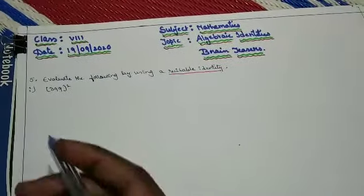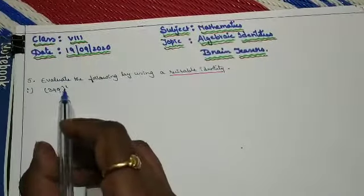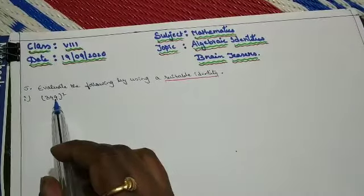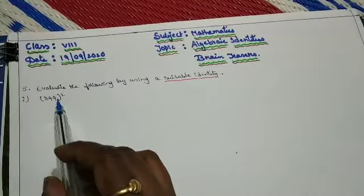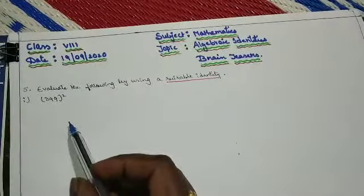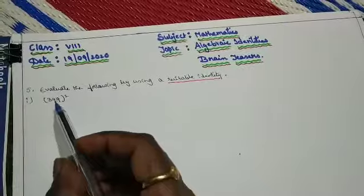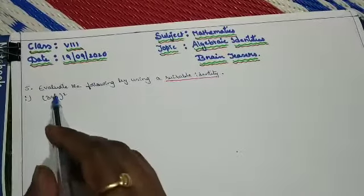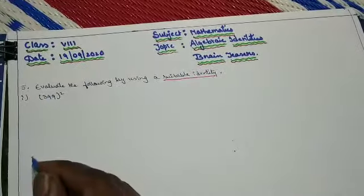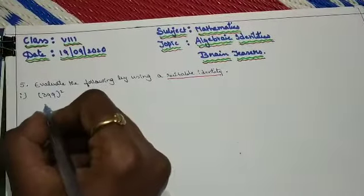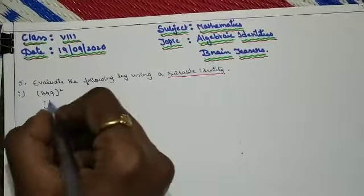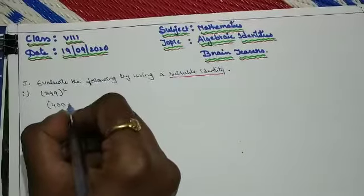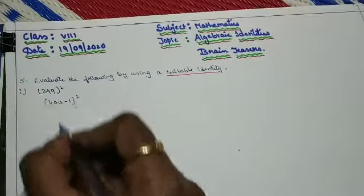The first question is 399 whole square. Here it is a three-digit number, 399, which is nearer to 400. So for 400, some number should be subtracted to get 399. What is that number? 1. So 399 can be written as 400 minus 1, whole square.